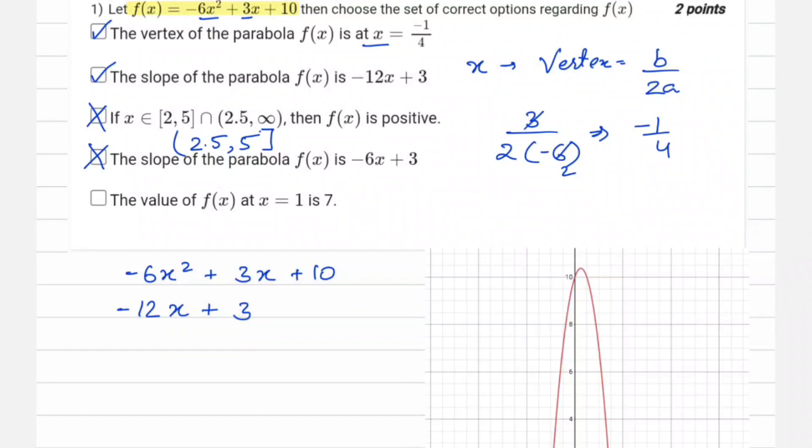The value of f(x) at x equals 1 is 7. So this is straightforward, we are directly going to put x equals 1. So we get minus 6 plus 3 plus 10, which comes out to be 7.